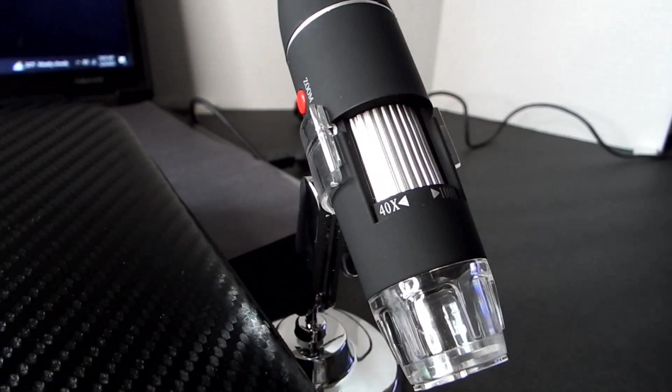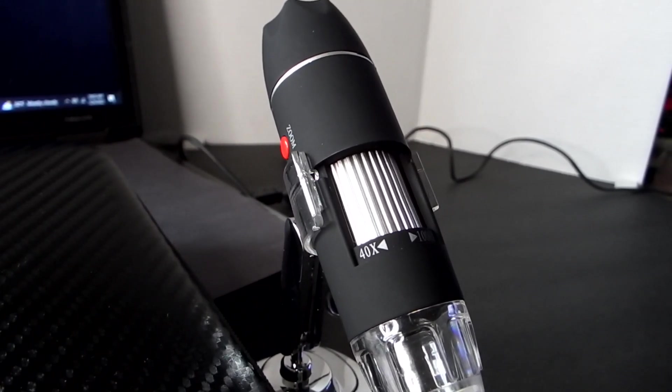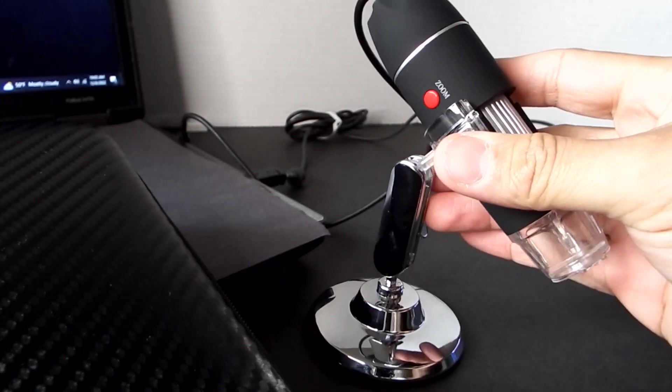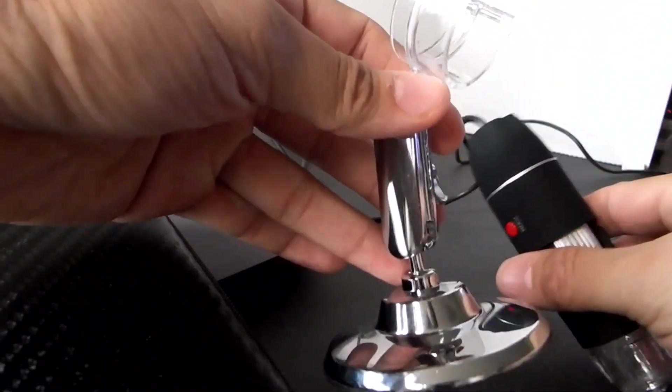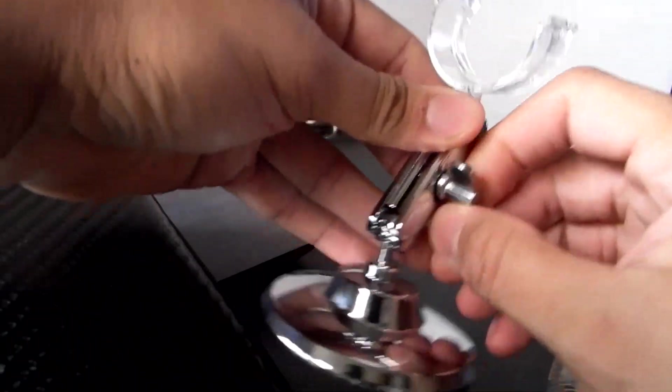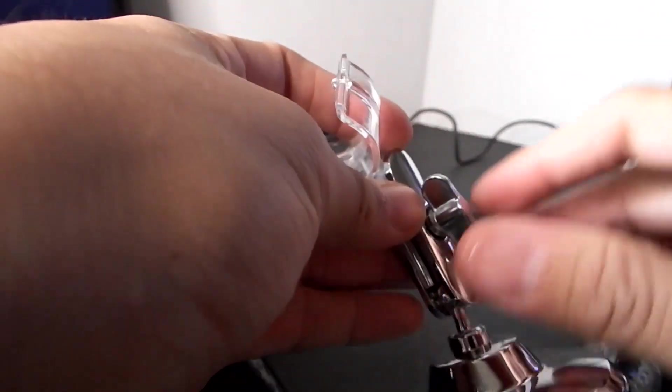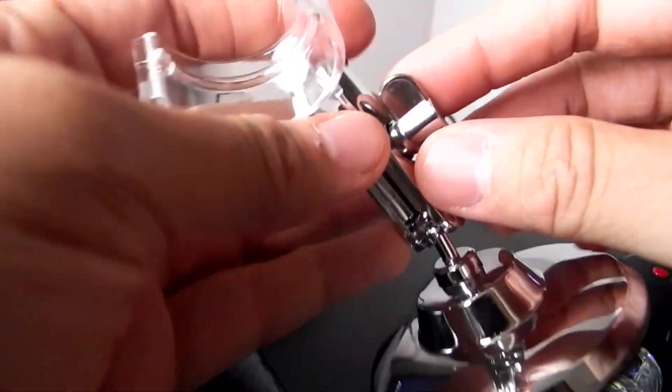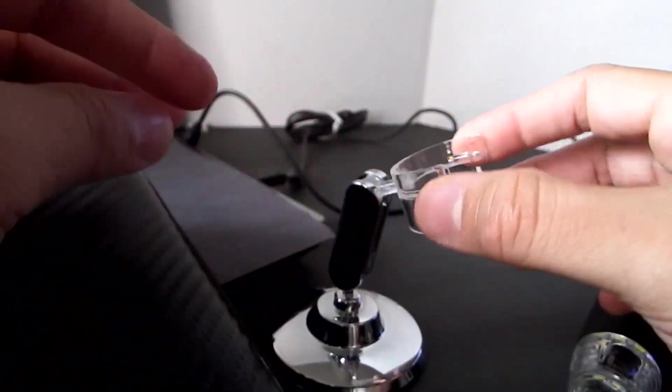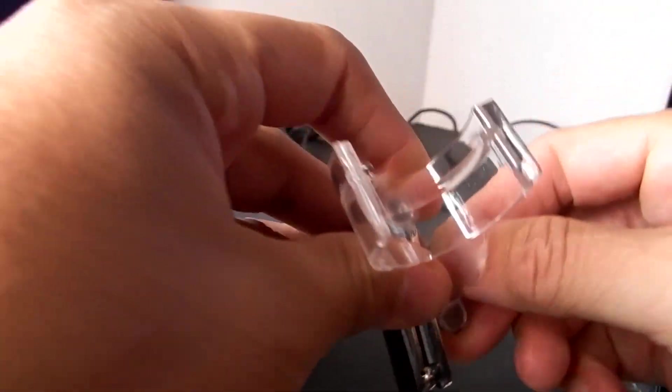They usually run around the price range of $40 or less. It comes standard with this holder here. It is metal and twists to adjust. If you loosen it too much it'll pop apart, but you can put it back together. This is plastic, that's the only thing I'm not a fan of. It looks like it could break pretty easily, so just be careful when you handle this.